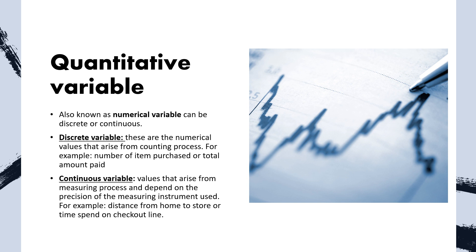Quantitative variables, also known as numerical variables, can be either discrete or continuous. Discrete variables arise from the counting process — for example, the number of items purchased or the total amount paid. Continuous variables arise from the measuring process and depend on the precision of the measuring instrument — for example, distance from home to a store, time spent in a checkout line, length of an arm, your weight, or your height.